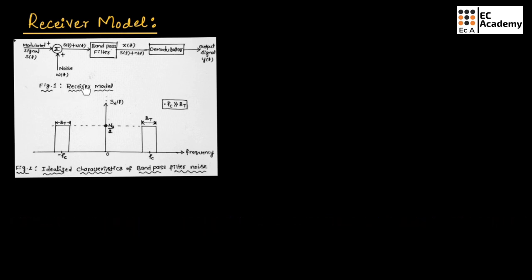Figure 1 shows the basic form of the receiver model. Here S(t) is the modulated signal and W(t) is the noise. Generally, this noise will be wideband noise. So the receiver input will be the sum of S(t) and W(t).